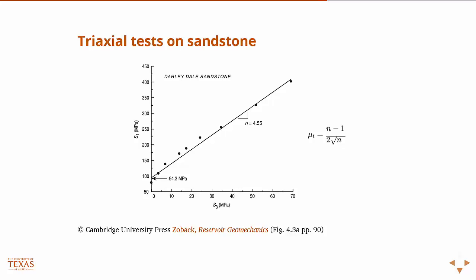Then you plot those lines, and the slope of that line is n. This is on the s1, s3 axis, but they're all related through the geometry of Mohr's circle, so you can then infer or determine what the internal friction angle mu is from the slope of this. And the cohesion is the y-intercept.